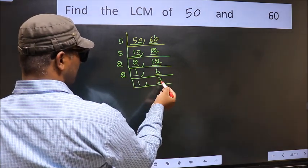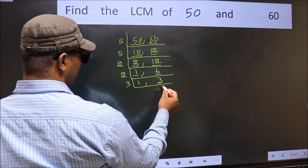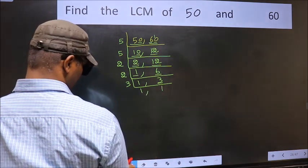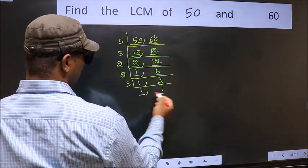Now we have 3. 3 is a prime number, so 3 times 1 is 3. So we got 1 in both the places.